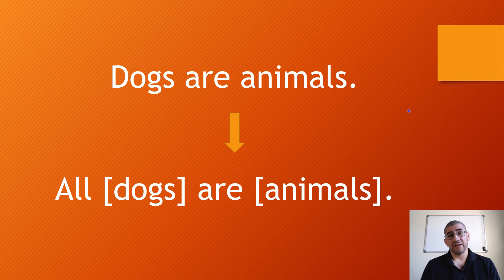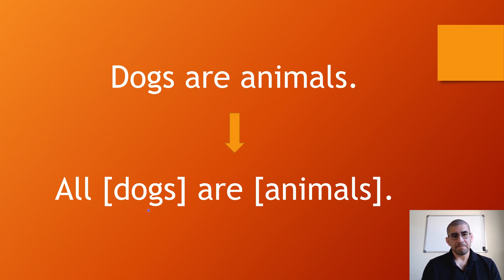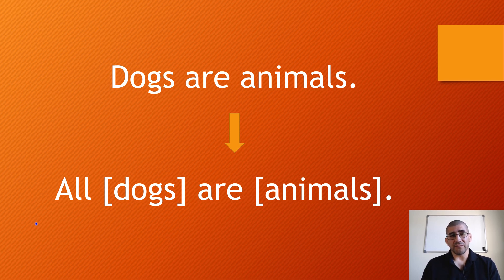Look at this proposition: 'Dogs are animals.' If I was going to put this into logical form, it already has the copula. All it needs now is the quantifier 'all,' and brackets around the subject term and the predicate term. Here is the subject term, and here is the predicate term. This is an A statement — we can clearly see it. If you're unfamiliar with the four types of propositions, you should review that lecture on the four propositions from Aristotle's logic.